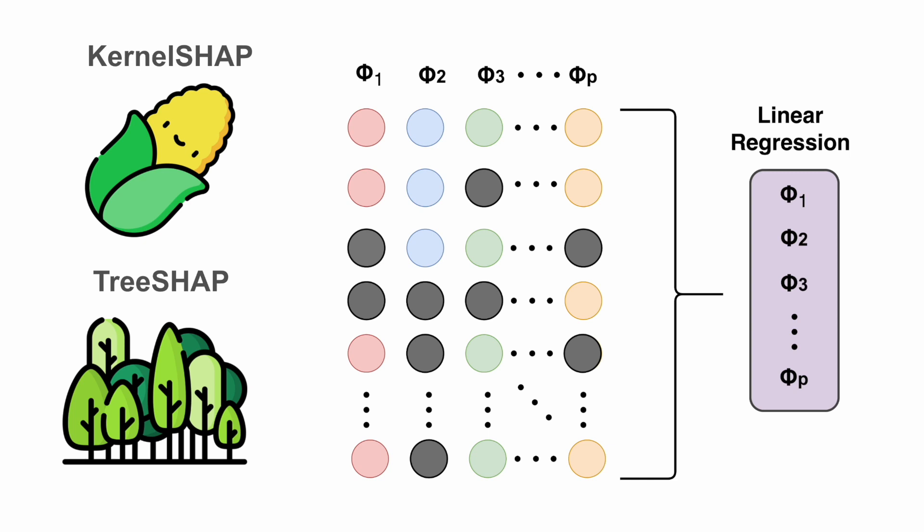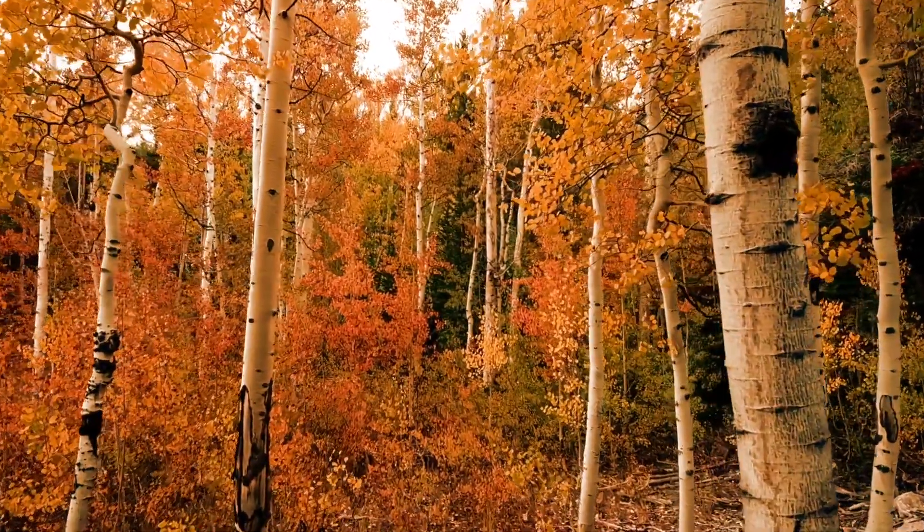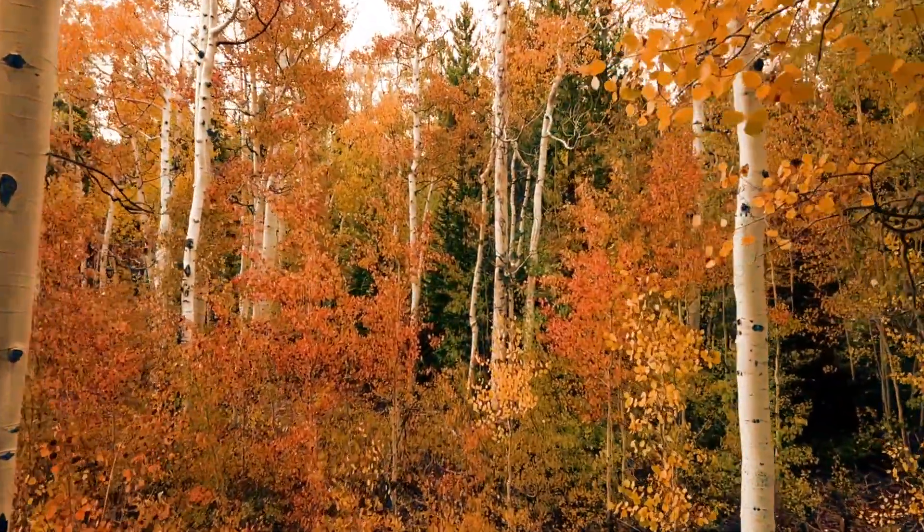TreeShap is even faster than KernelShap. It takes advantage of the structure of individual trees in ensemble models, and is so efficient it can be used to calculate Shap interaction values. The downside is it can only be used with tree-based algorithms like Random Forests or XGBoost. Shap still has its limitations, which are critical if you want to avoid incorrect conclusions. Check out the first video to understand them, or the second video to jump straight into applying the package. You can also get access to my Python Shap course for free by signing up to the newsletter in the description, which will equip you with the knowledge and skills needed to explain any machine learning model using Shap.